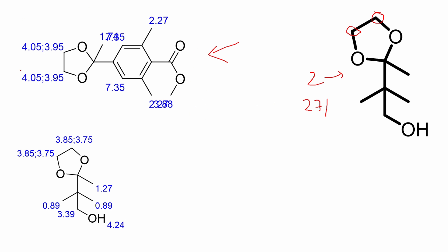This is the compound given in the question, along with the proton NMR prediction. You can see clearly that one of the hydrogens is at 4.05 and the other is at 3.95. That is because these two hydrogens are diastereotopic in nature, and diastereotopic protons never give the same chemical shift — they always give different chemical shifts, whereas enantiotopic protons give the same chemical shift.